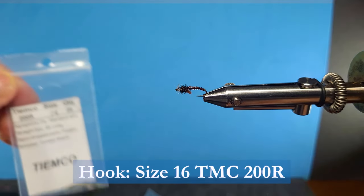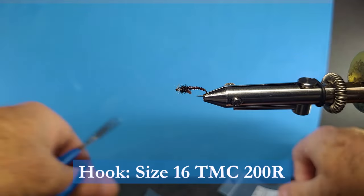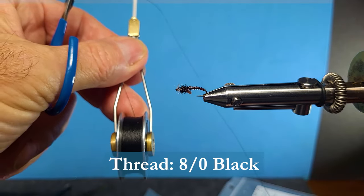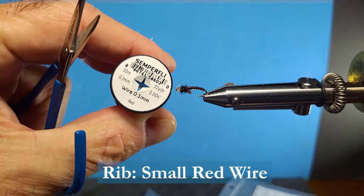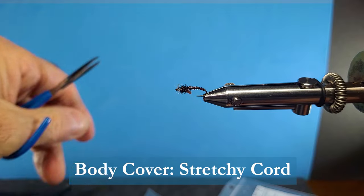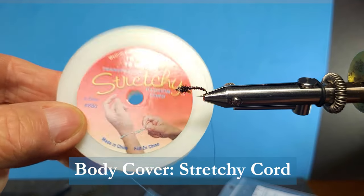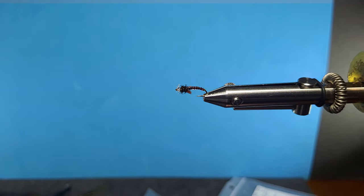I'm going to be using TAMCO 200R size 16 continuous curved hook, some 8-aught waxed thread, some extra small red wire, and some stretchy cord. This is a 0.5 millimeter stretchy cord that stays nice and clear and retains the color.